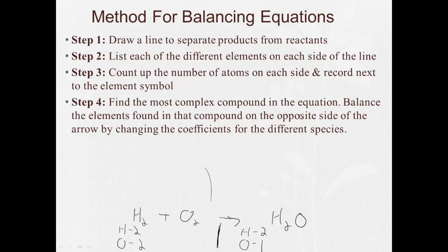Step four, find the most complex compound in the equation. In this case, that'll be water. Balance the elements in that compound on the opposite side of the arrow by changing the coefficients for the different species. What does that mean? Well, I've got to look here and see the hydrogens match, but now I have to balance the oxygens. So if I have two oxygens on the left and one on the right, what do I have to do? Well, I need to get two on the right. If I put a two in front of this, now I've balanced my oxygens. Now I have two oxygens on this side, but also, now I have four hydrogens.